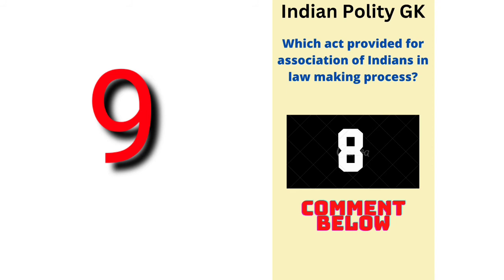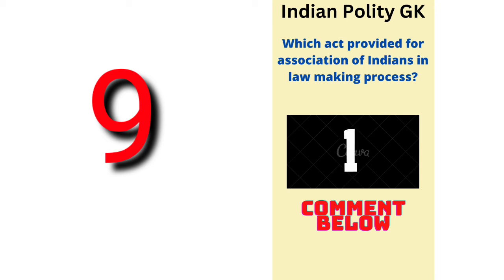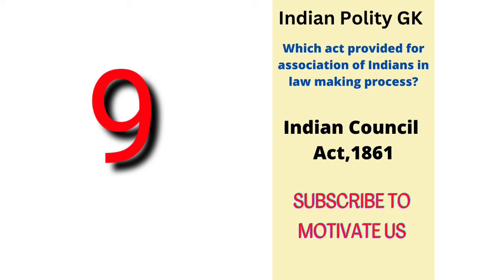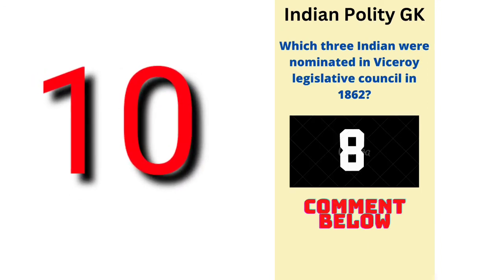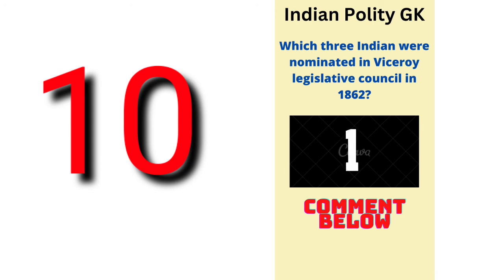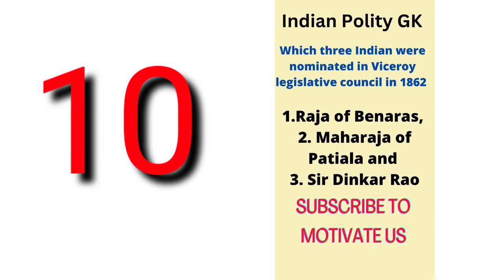The question is: which act provided for the association of Indians in the lawmaking process? The answer is the Indian Council Act of 1861 provided for the inclusion of Indians in the lawmaking process. The question is: which three Indians were nominated in the Viceroy Legislative Council in 1862? The answer is Raja of Banaras, Maharaja of Patiala, and Sir Dinkar Rao.